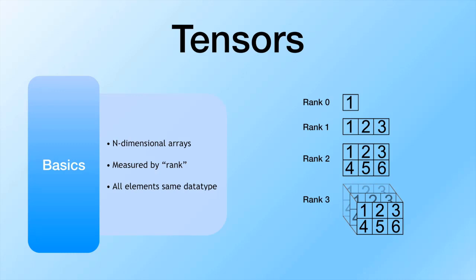One thing to note about tensors is that, unlike pandas DataFrames, every element in a tensor must be the same data type. With a pandas DataFrame you can have some columns as integers, some as strings, some as floats, and so on. In tensors, every single element must be the same type — so they can be all integers, all strings, or all floats.